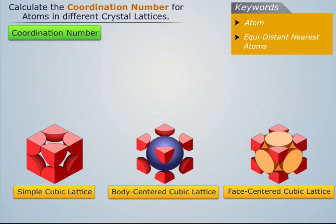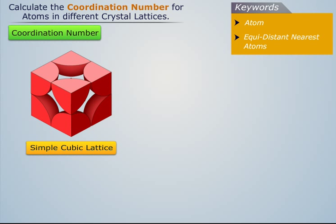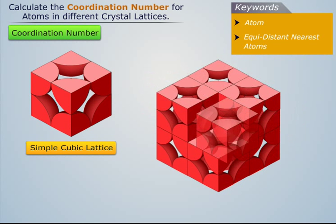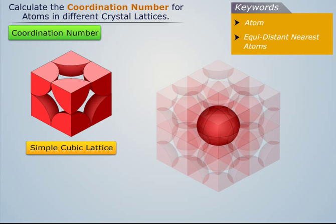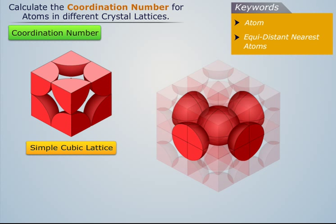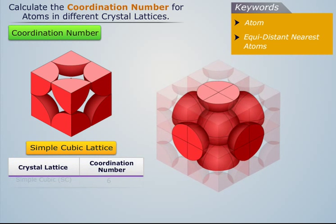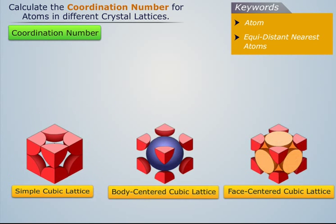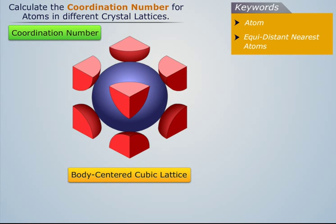We know that a simple cubic lattice has eight corner atoms. Every corner atom is surrounded by four nearest neighboring atoms in the same plane, and two nearest equidistant neighboring atoms — one above and the other below the plane. Thus, the coordination number for every atom in a simple cubic lattice is six.